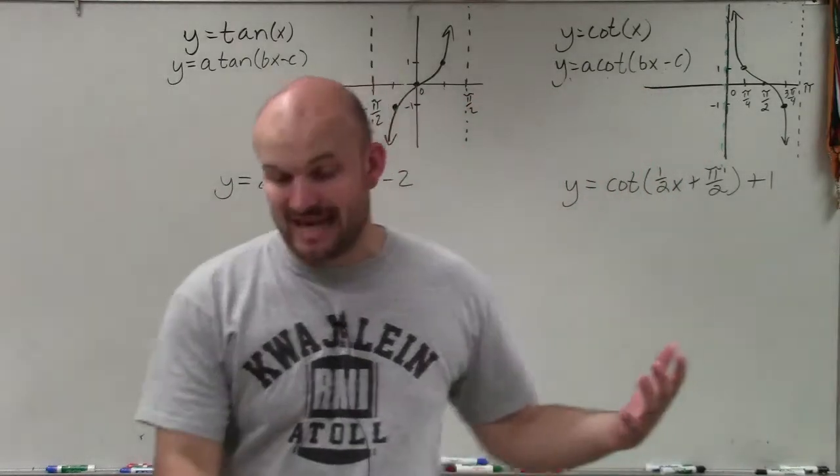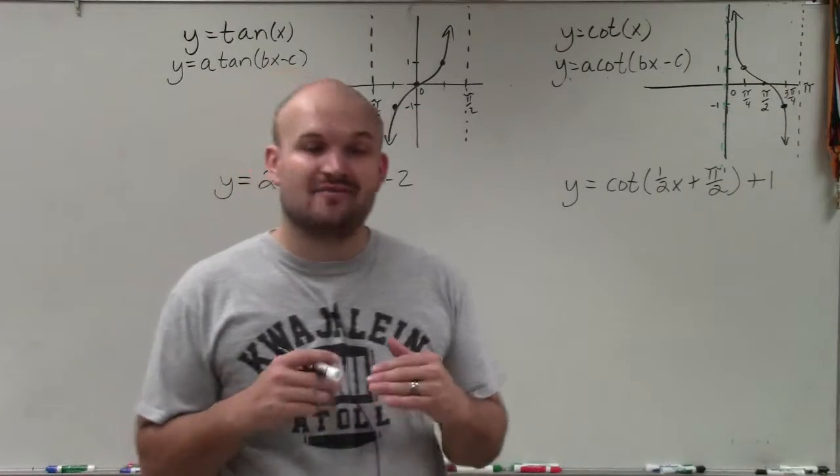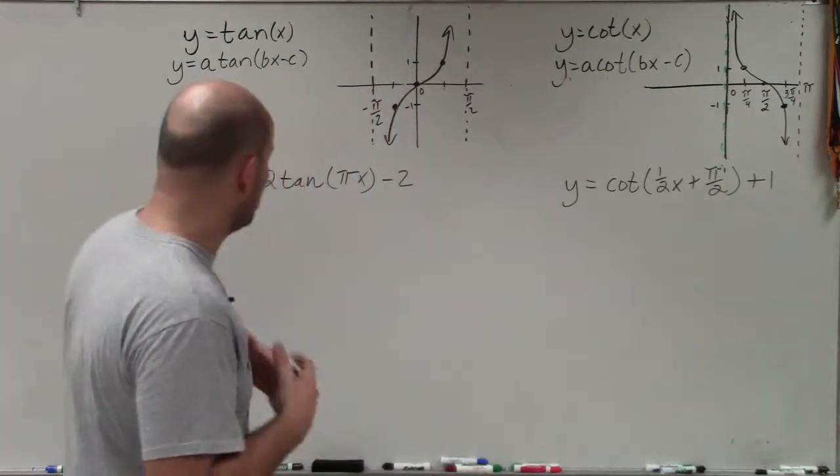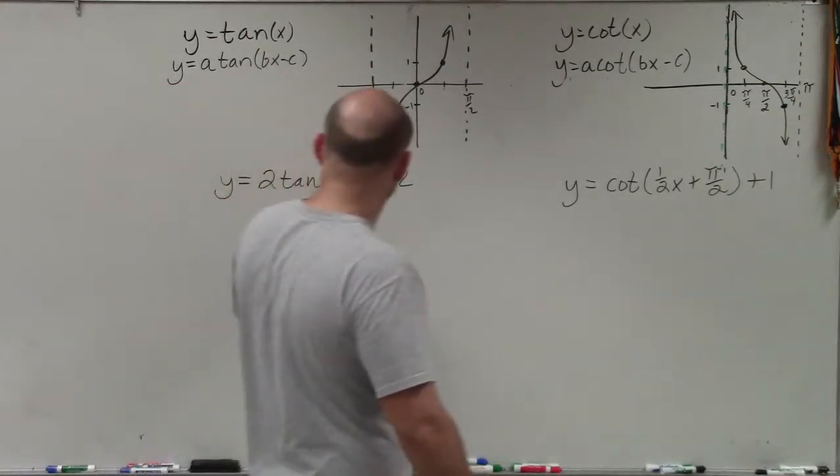So what I'd like to do is show you how to graph the tangent and cotangent functions when we have a vertical shift. Now, in this case, you can see we have two equations here.